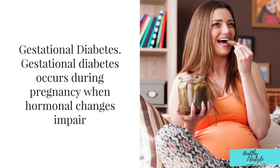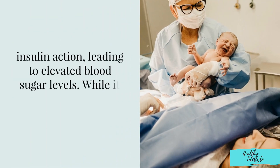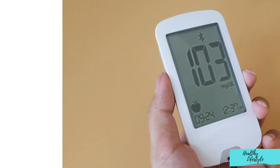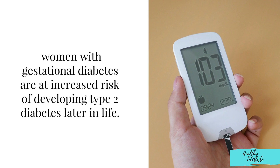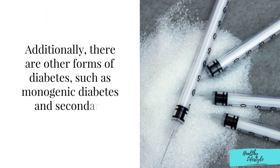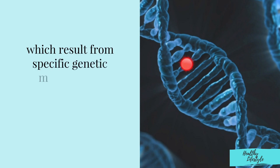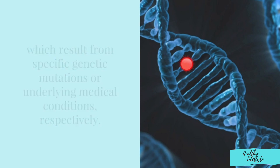Gestational diabetes occurs during pregnancy when hormonal changes impair insulin action, leading to elevated blood sugar levels. While it typically resolves after childbirth, women with gestational diabetes are at increased risk of developing type 2 diabetes later in life. Additionally, there are other forms of diabetes such as monogenic diabetes and secondary diabetes, which result from specific genetic mutations or underlying medical conditions, respectively.